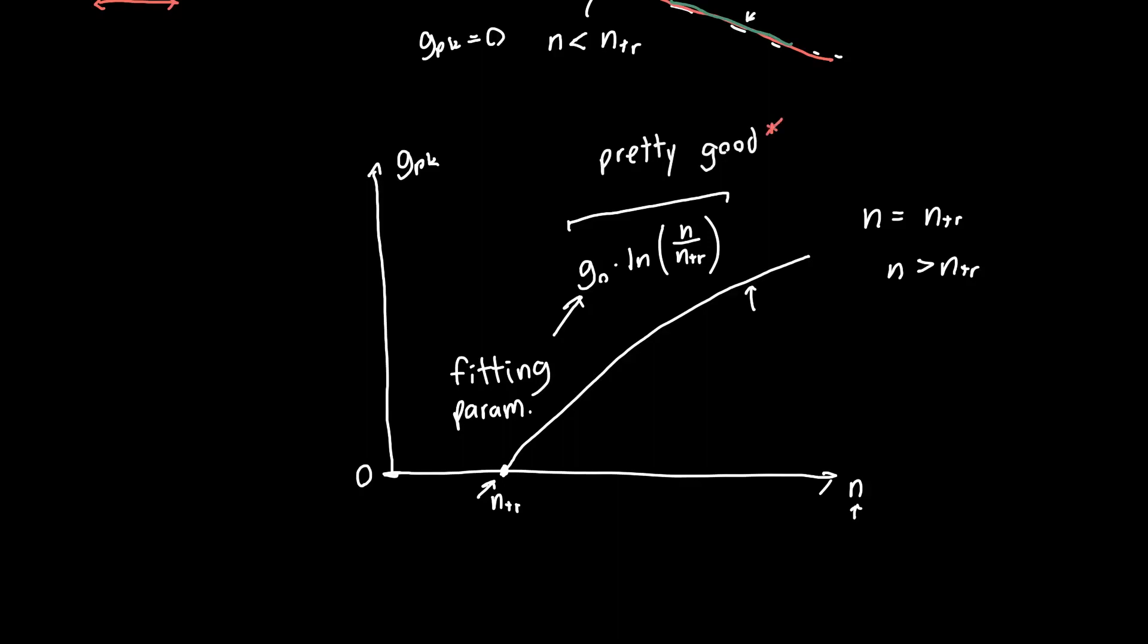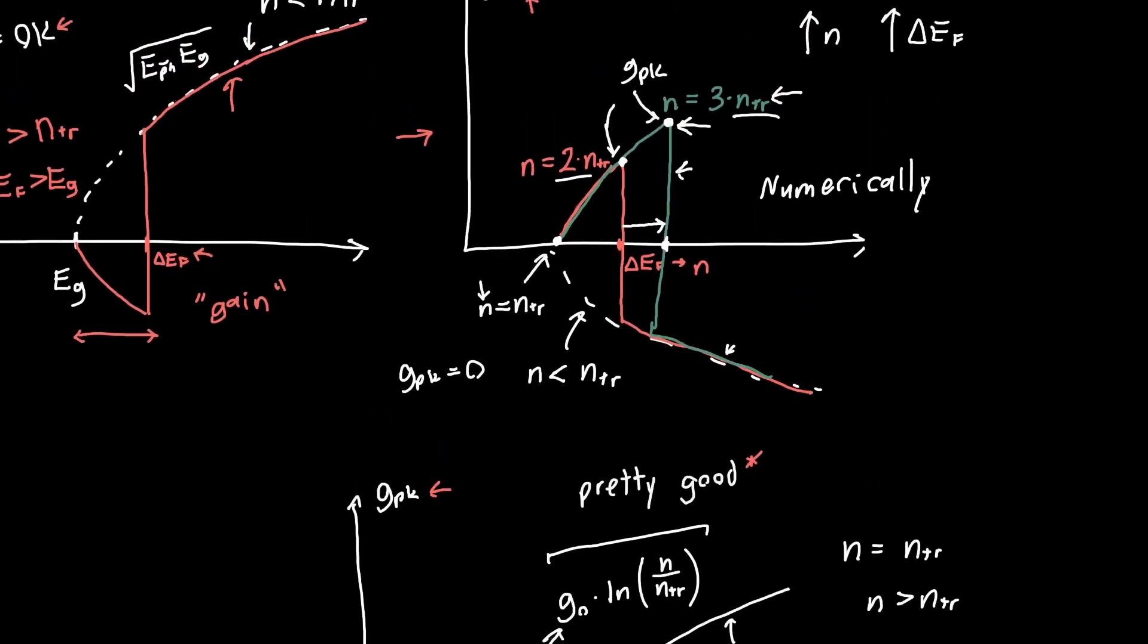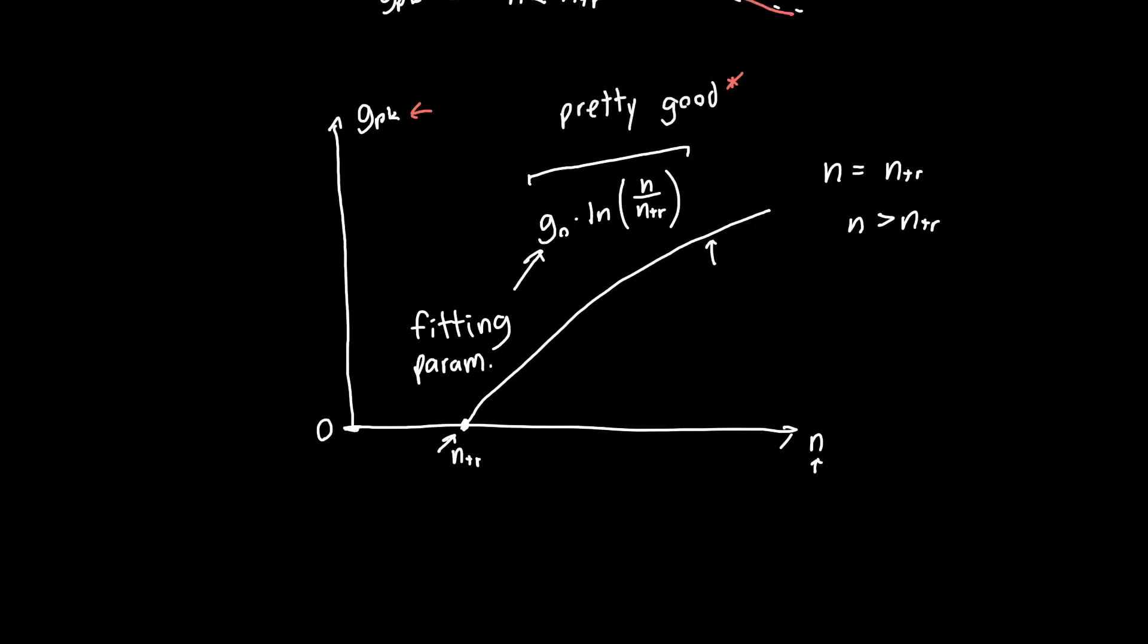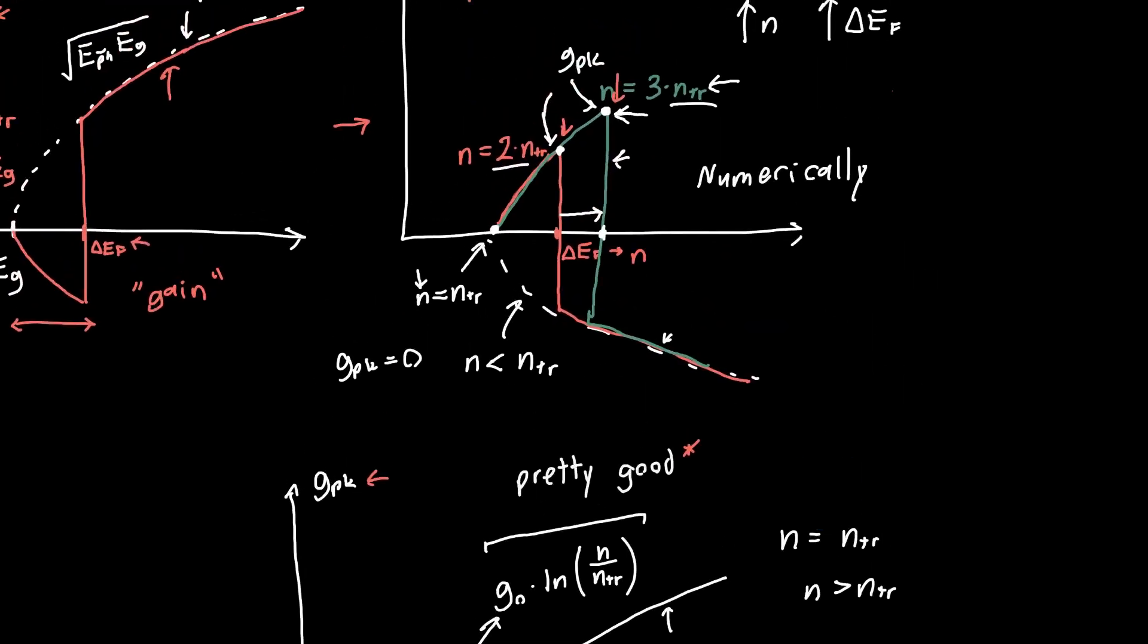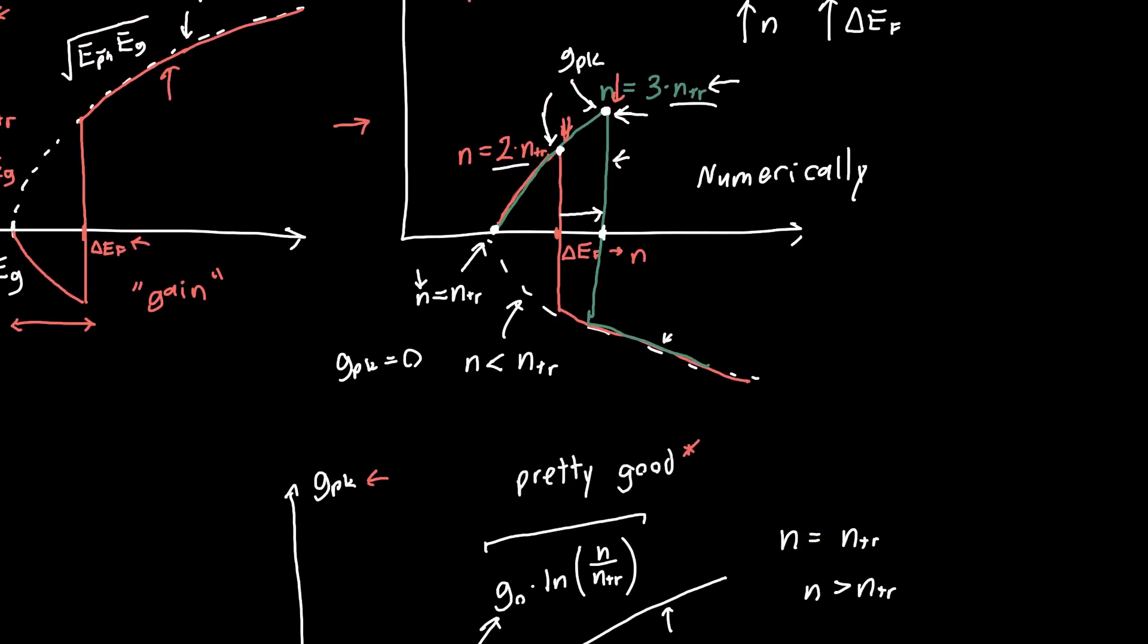Now there's a couple subtleties here that you should be aware of. So this isn't just the gain at a specific wavelength, this is actually the gain that corresponds to several different wavelengths. So each point on this curve corresponds to a slightly different wavelength, because as we're changing n, we're changing the peak wavelength at which this curve has its maximum.